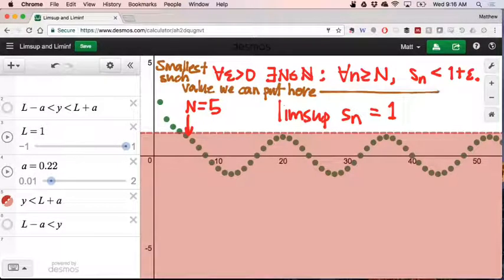It's the smallest such value that we can put here. We can't put any smaller value than one right there. We could put larger values. If we raise the ceiling, then we're still going to be able to stay under it. But the lowest possible ceiling that we can place that my sequence eventually never crashes through. That's what we call the limit superior.